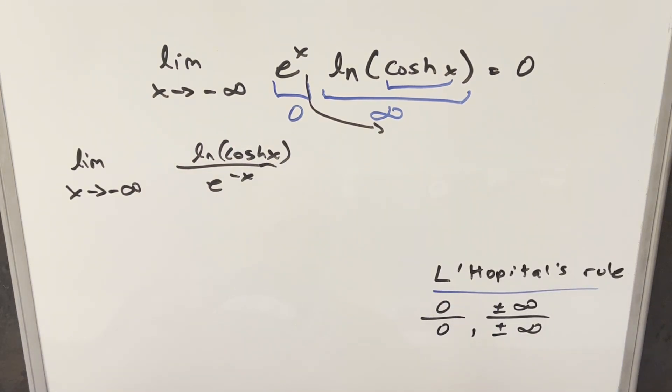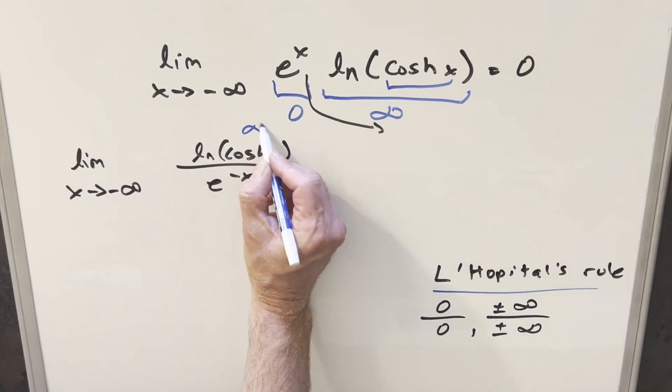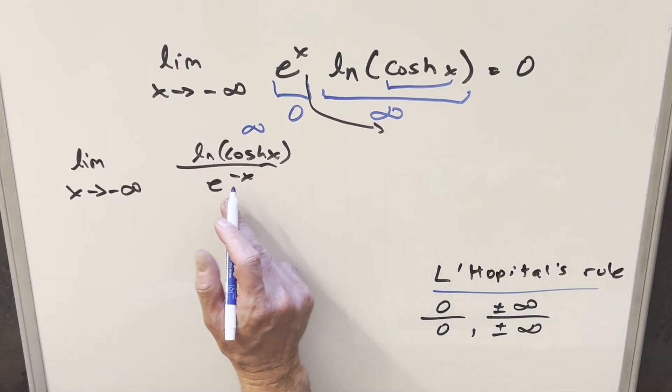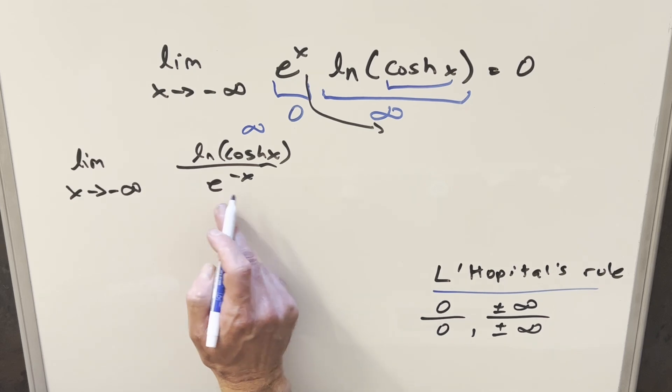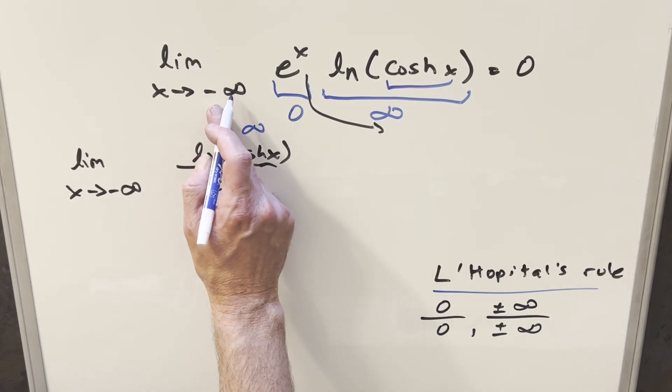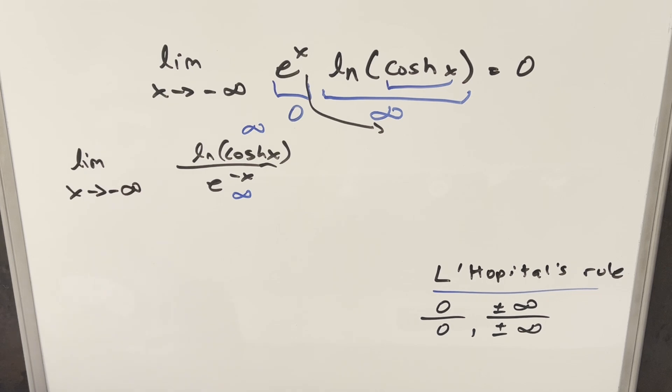Now in order to use this, we need it to be one of these two forms here. We already confirmed that this numerator is infinity. We said before this was zero, but when you bring this into the denominator, e to the minus x, with x going to minus infinity, this piece now is going to infinity. So this is going to be this case over here.